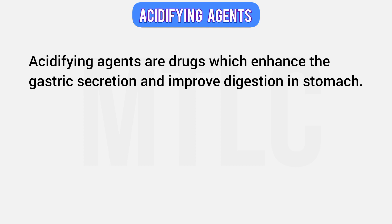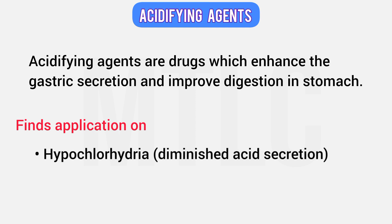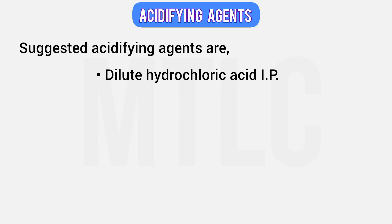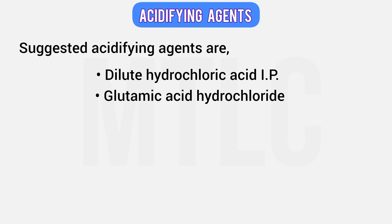What acidifying agents are: if you have reduced gastric secretion, you can improve your digestion. This agent is used in conditions where there is no or little acid secretion — that's the condition of hypochlorhydria or achlorhydria. Examples include dilute hydrochloric acid, glutamic acid hydrochloride, and betaine hydrochloride. These can be given as acidifying agents.